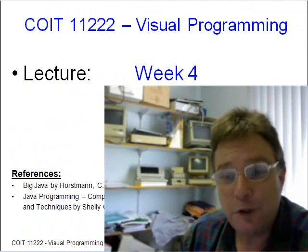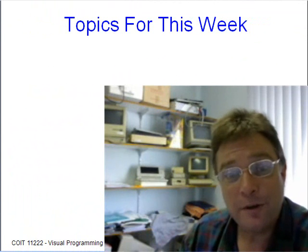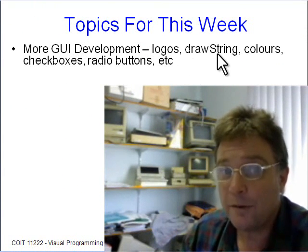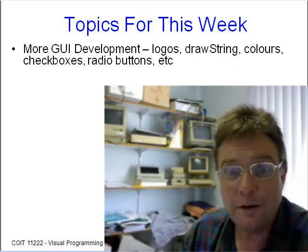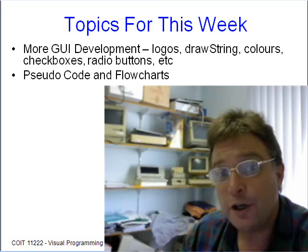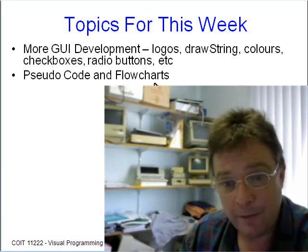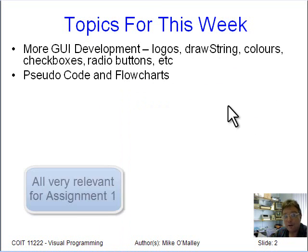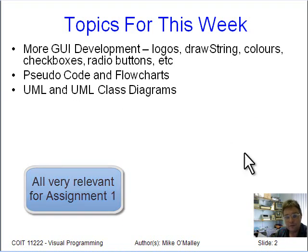Hello and welcome to week four of visual programming. This week we do quite a lot of new material. We look at more GUI development — using logos, the drawstring method, colours, checkboxes, radio buttons and so on. So a lot of new stuff. We're also looking at pseudo code and flowcharts and what they mean and how useful they can be — great tools for helping you develop your applications, especially pseudo code. We'll talk briefly about UML and UML class diagrams.